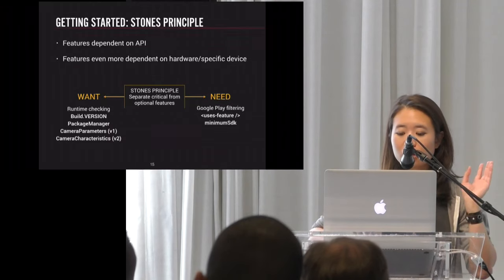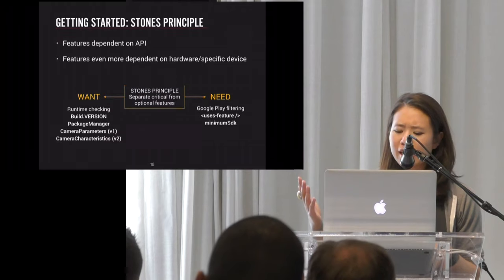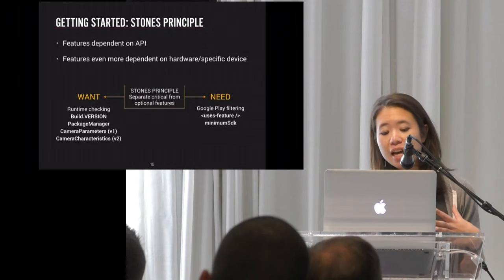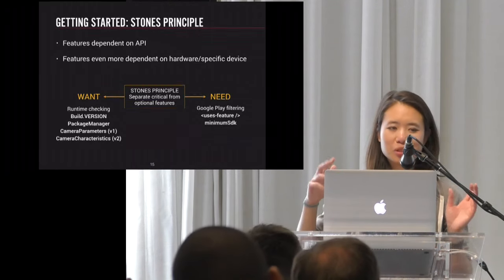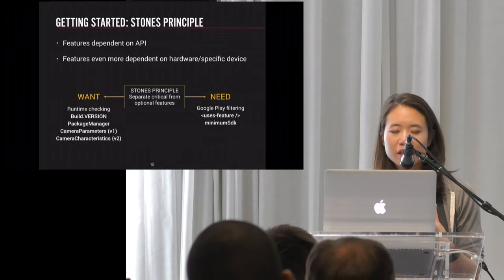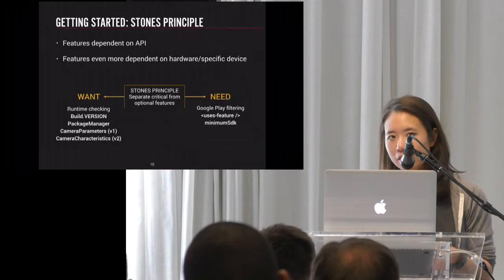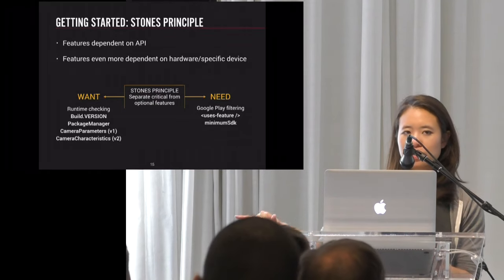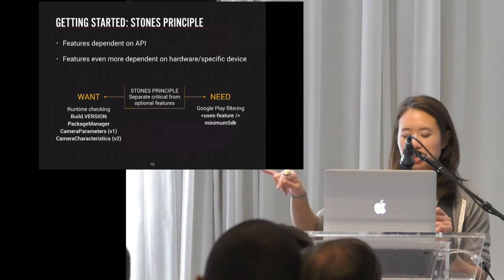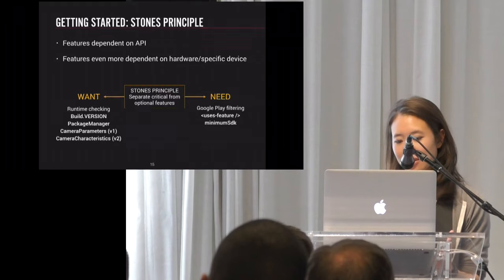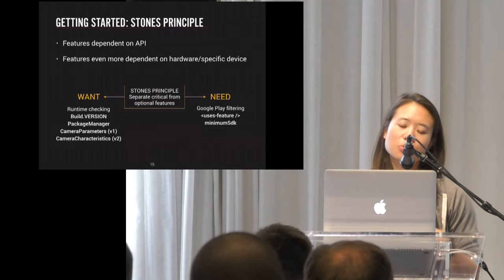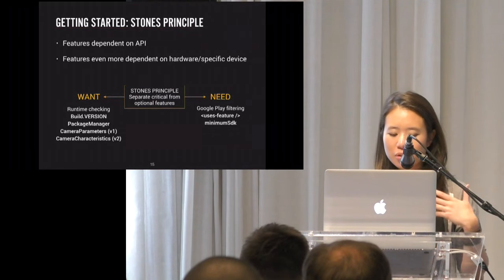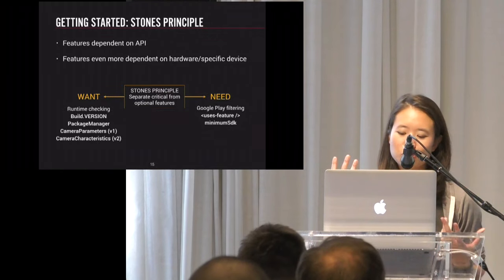Even though they're both running the same API, they have completely different feature sets. It's really important when doing a camera application to figure out what your critical features are and separate them from your optional features. You can use Google Play filtering with the uses-features tag in your manifest to filter out your user base — for example, requiring a front camera and autofocus. For optional features, you have runtime tools: the build version number, package manager queries for hardware features, camera parameters in Camera 1, and camera characteristics in Camera 2.